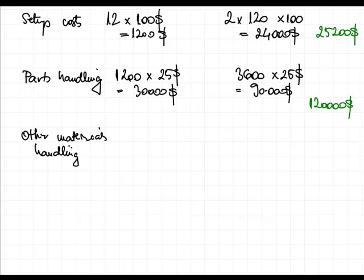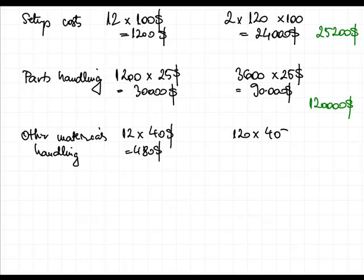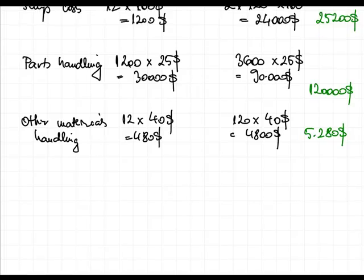Other materials handling depends on the batches for each product — that is 12 for product A and 120 for product B — and it costs $40 a batch. So 12 batches for product A gives $480, and 120 batches for product B gives $4,800, for a total of $5,280.